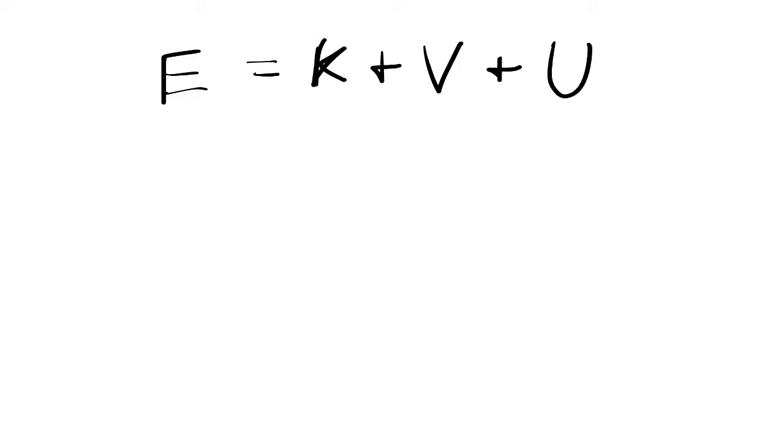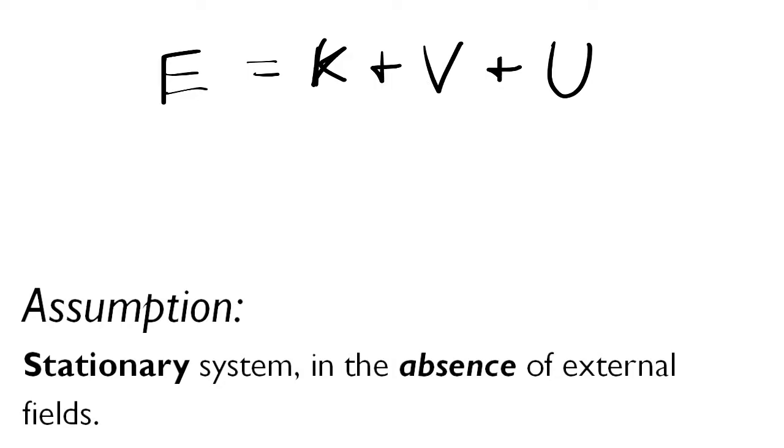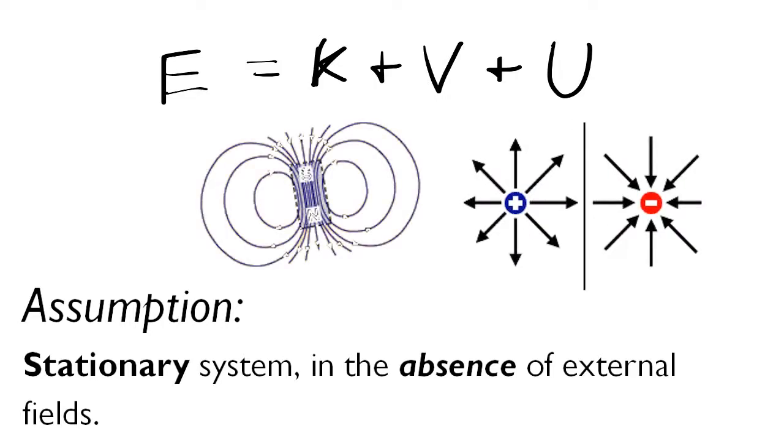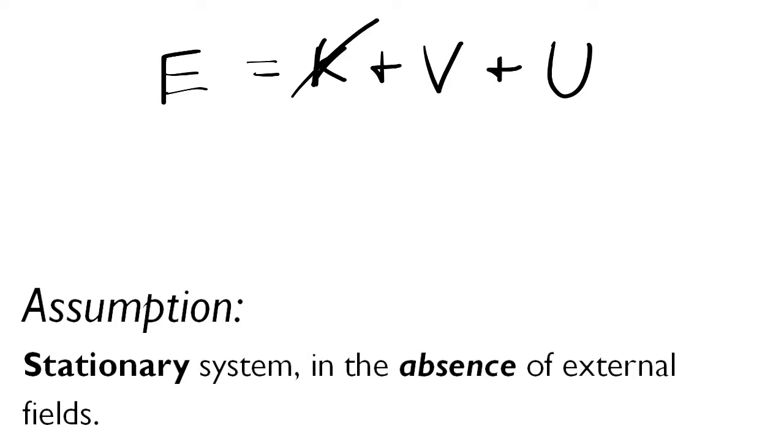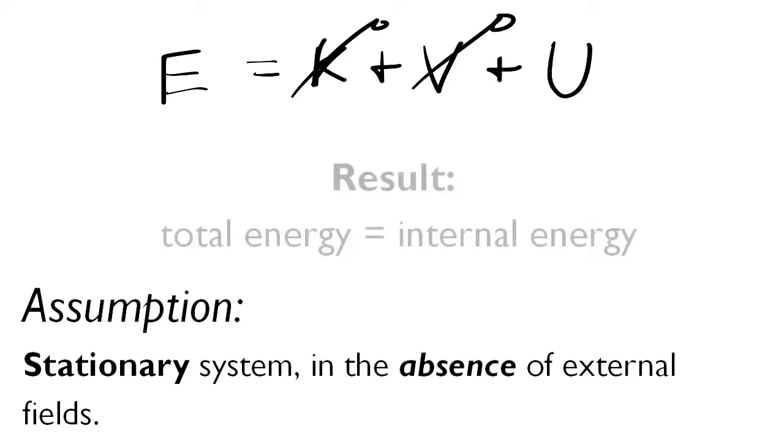For simplicity we will consider a system that does not move, a stationary system that does not interact with external fields. So we will ignore the interactions with magnetic fields and electric fields. In that case you would have K and V both equal to zero, and total energy is equal to the internal energy.